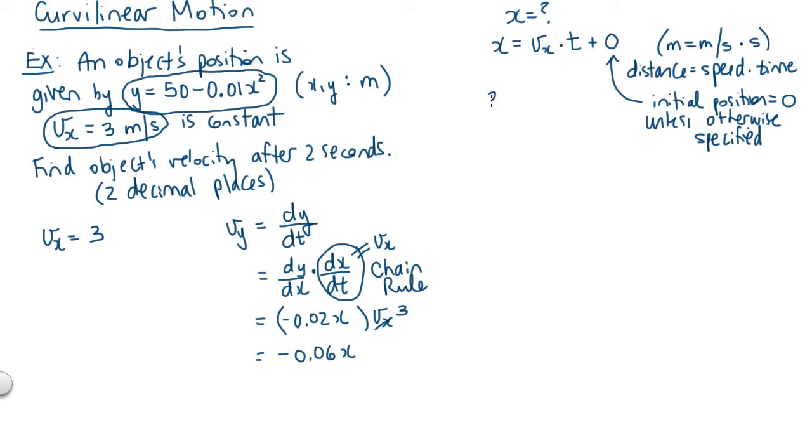In our particular problem, x equals vx times t. We know that vx is constant throughout this problem, so vx equals 3, and that means x equals 3t for this problem. Now that that's simplified, let's plug this into vy and we'll have a nice expression for vy.